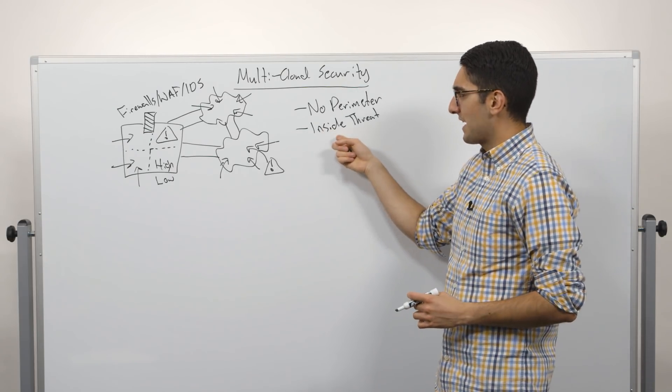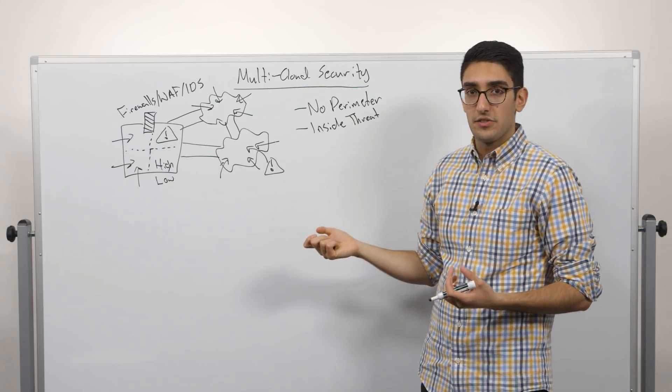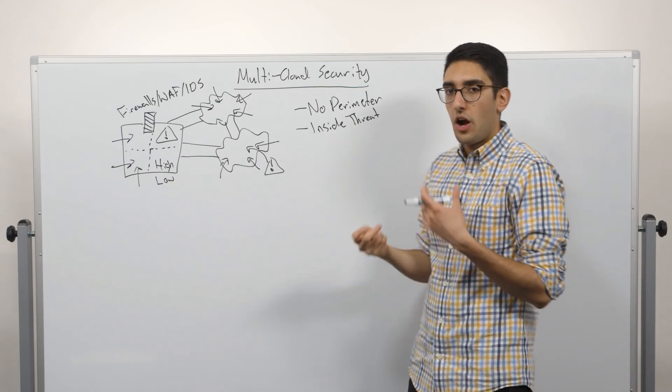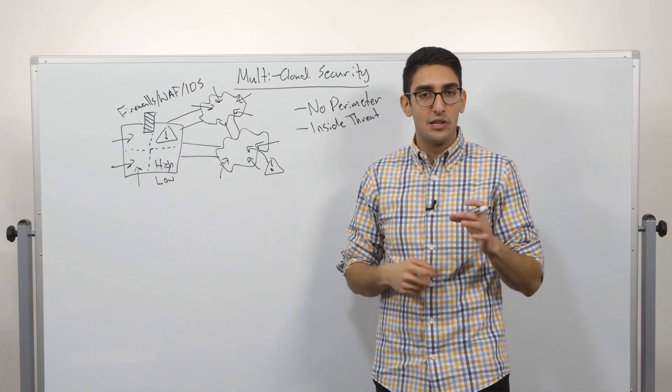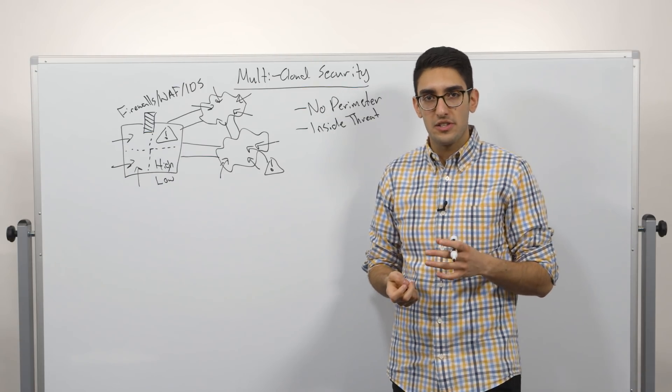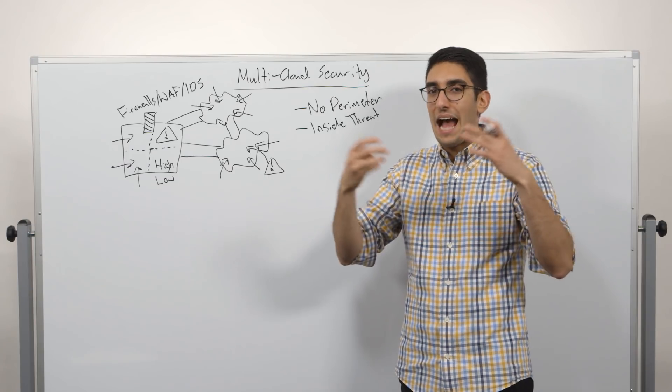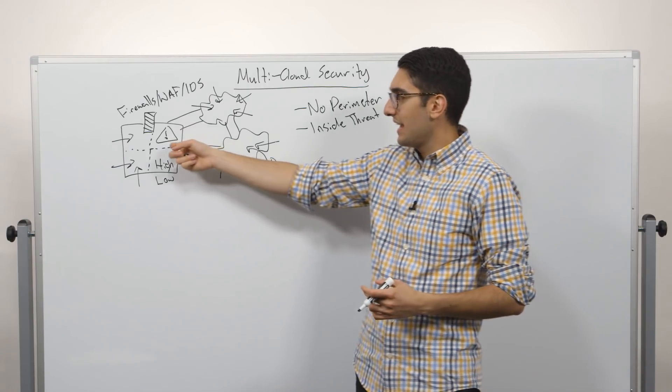The other perfect example is looking at something like the Snowden documents. When we look at Snowden, he was a contractor of the NSA. So he had VPN credentials, he had an ability to log in and access these privileged systems. So this is not an attack from the outside of the organization. This is an insider threat.